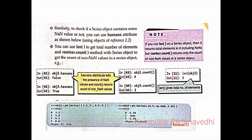The len() function gives the total number of elements including NaN ones. The next method is count(). Count() returns only the count of non-NaN values in the series. The difference is: len() includes NaN values in the total, while count() counts only non-NaN elements.